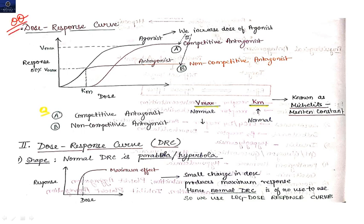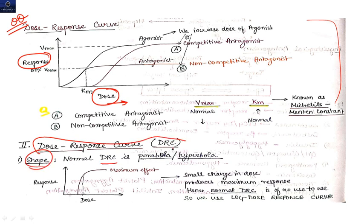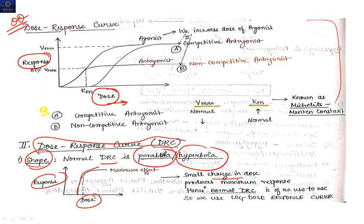Now, one of the most important and frequently examined topics is the dose-response curve (DRC). On the x-axis we plot dose and on the y-axis we plot response. The normal DRC is a hyperbola or parabola — on a parabolic curve it is very difficult to estimate small changes in dose that produce large changes in response. Hence the normal DRC is of limited use, so we use the log dose versus response curve instead.